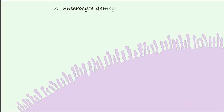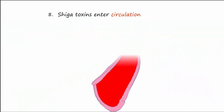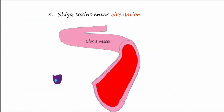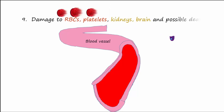This leads to cell damage and death, which can lead to bloody diarrhea. The toxin can then gain entrance into circulation and travel to organs throughout the body. The toxin may damage red blood cells, platelets, kidneys, and brain, and may even lead to death.